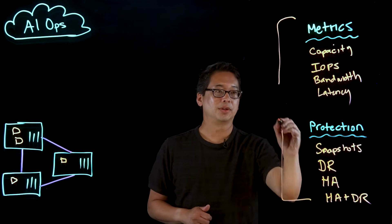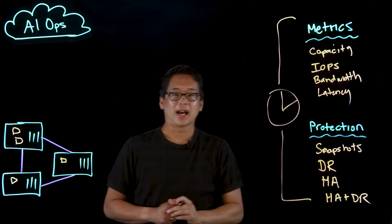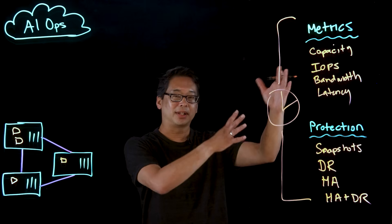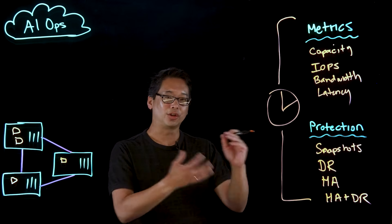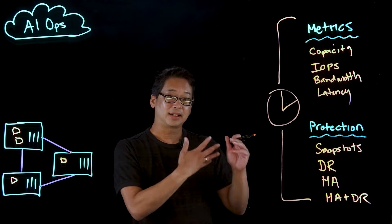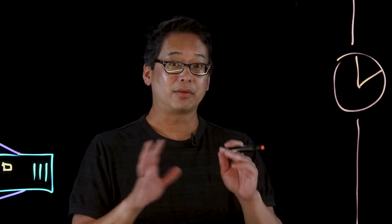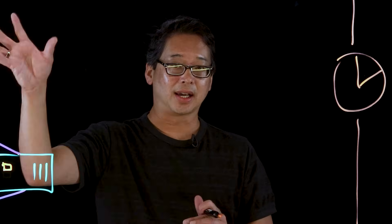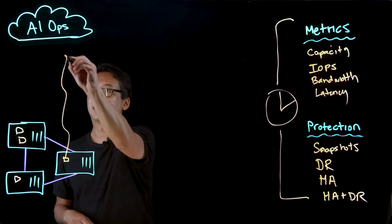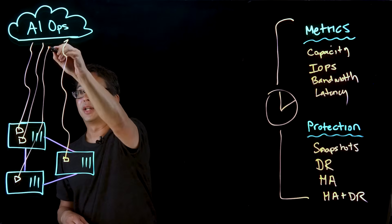The other important part of this concept is we have to take this information and apply time to it. A point-in-time copy of all this information is interesting, but not that interesting because you don't have a historical reference. So as we feed this information up to our AIOps platform, we apply time to all of these items. That will help the AI make correct decisions as to which, when, and where to move the data. We take all this information, attach it to the storage partitions, and send it up to our AIOps platform, where it does machine learning and gathers all this information for later use.